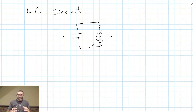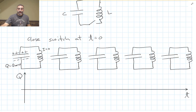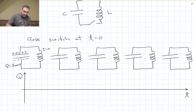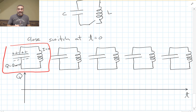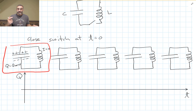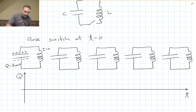Assuming our capacitor is charged, let's close that switch at t equals zero and see what happens. I'm going to plot the charge on the capacitor as a function of time after we close that switch. At t equals zero, the circuit looks like this — the capacitor is fully charged. We've just closed that switch, but current doesn't start flowing immediately because of the inductance in the coil. So we have zero current flowing and the maximum charge on our capacitor.